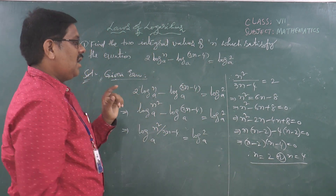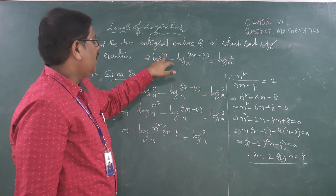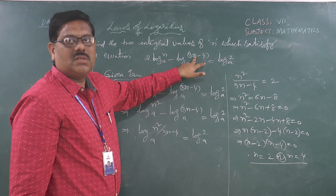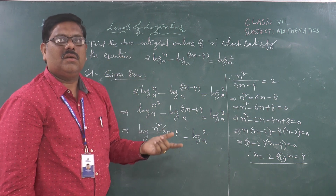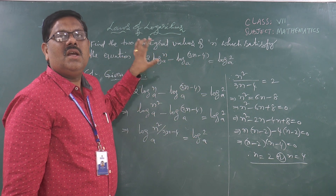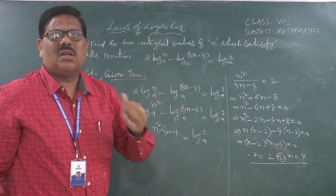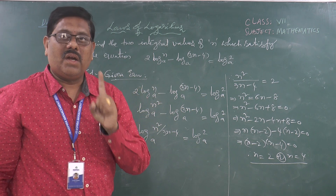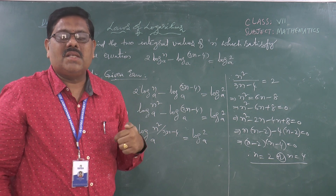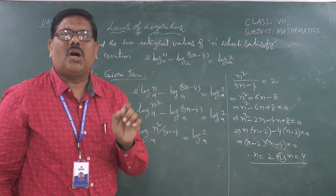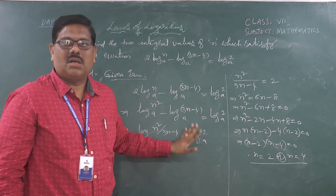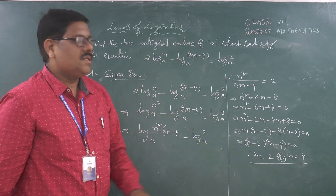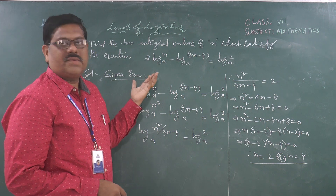These are the two integral values. After getting the n values, we must recheck. If n is 2 or 4, n is positive — valid. For 3n minus 4: if n equals 2, then 6 minus 4 equals 2 — valid. If n equals 4, then 12 minus 4 equals 8 — valid. We must substitute values in the given equation and verify the basic conditions of log: logarithm is not defined for negative numbers or zero, only for positive real numbers. Also, the base must be a positive real number not equal to 1. Both values n equals 2 and n equals 4 satisfy the conditions.